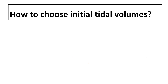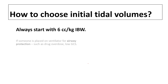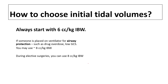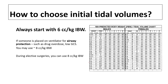How do you choose initial tidal volume? We always start with 6 cc per kg ideal body weight. If you are placing somebody on the vent for airway protection — for example, drug overdose — you may use 8 cc per kg ideal body weight as well. During elective surgeries, anesthetists like to use 8 to 10 cc per kg ideal body weight. Using this chart you can figure out how much tidal volume to give to any patient, showing cc per kg and the height of the patient.